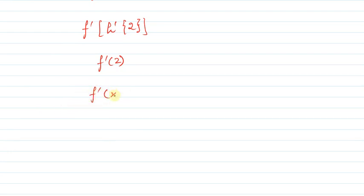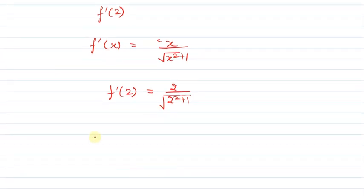We had f'(x) is equal to x divided by the square root of x squared plus 1. So f'(2) will be 2 divided by the square root of (2 squared plus 1). Further solving, we get f'(2) is equal to 2 divided by the square root of 5. I hope you have understood this solution. Thank you.